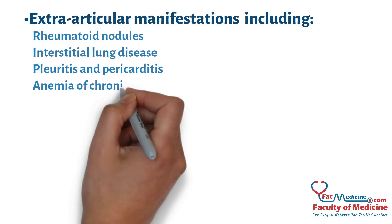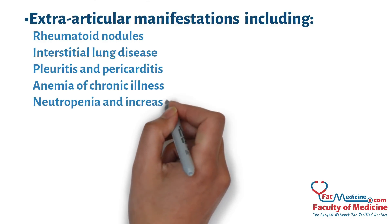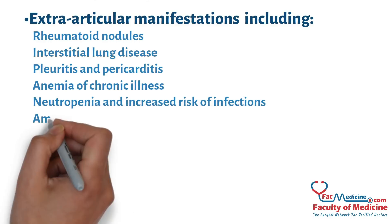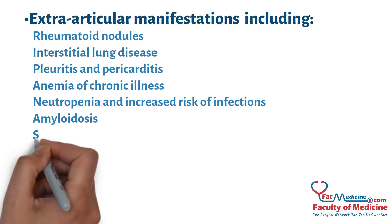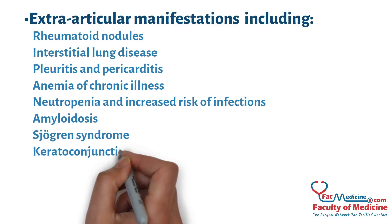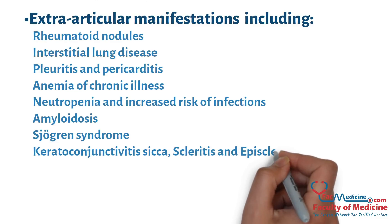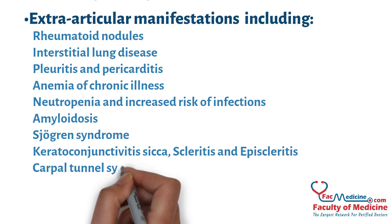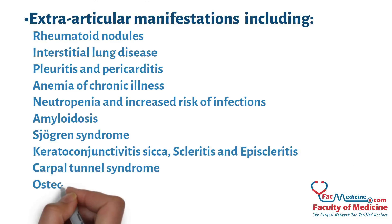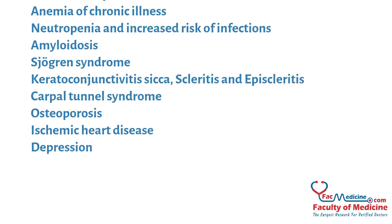Further extra-articular manifestations include anemia of chronic illness, neutropenia and increased risk of infections, amyloidosis, Sjögren's syndrome, keratoconjunctivitis, scleritis, episcleritis, carpal tunnel syndrome, osteoporosis, ischemic heart disease, and depression.